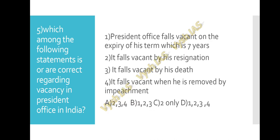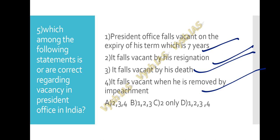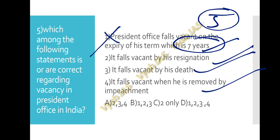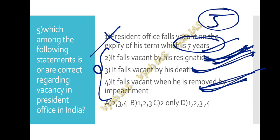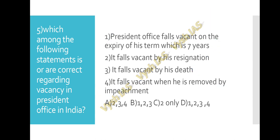Question number five: Which of the following statements is or are correct regarding vacancy in the President's office? Statement 1 says the office falls vacant on expiry of a seven-year term — this is wrong, as the term is five years. The office does fall vacant by resignation (by submitting a letter to the Vice President), by his death, and when removed by impeachment. So statements 2, 3, and 4 are correct, making option A the answer.